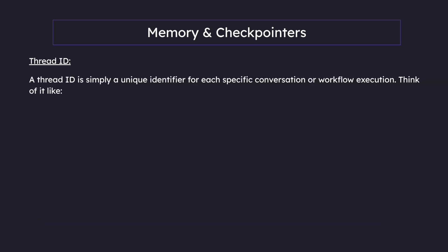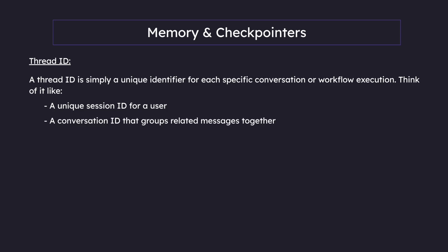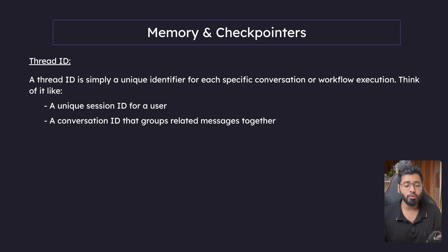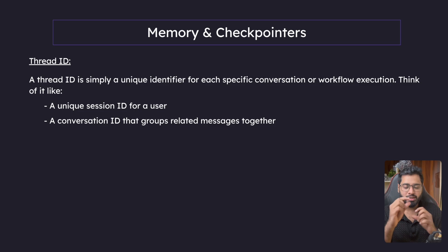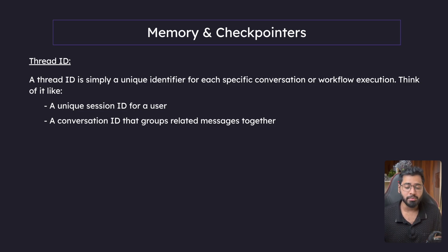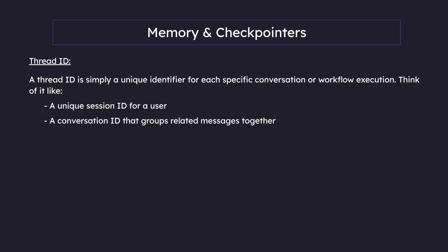A thread ID is simply a unique identifier for each specific conversation or workflow execution. You can think of it like a unique session ID for a user, or a conversation ID that groups related messages together. If you've ever used the web version of ChatGPT or Claude, every single chat or conversation you create has its own thread ID — that is how we separate out these conversations.